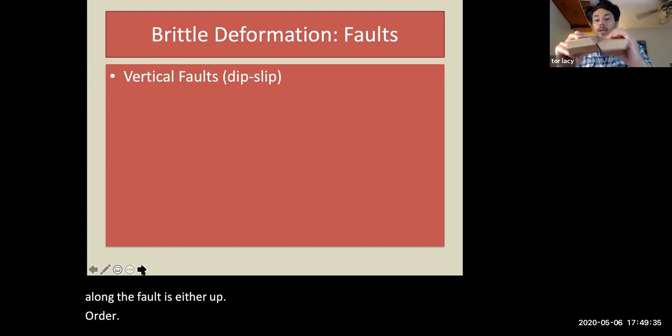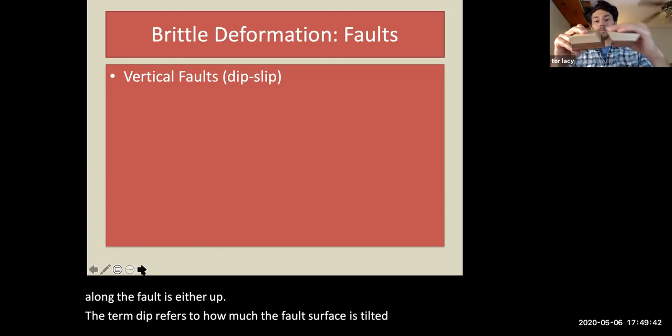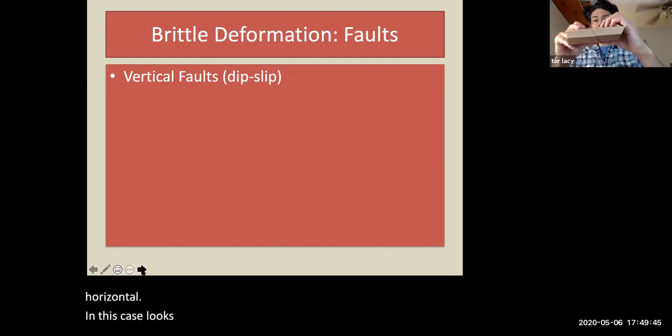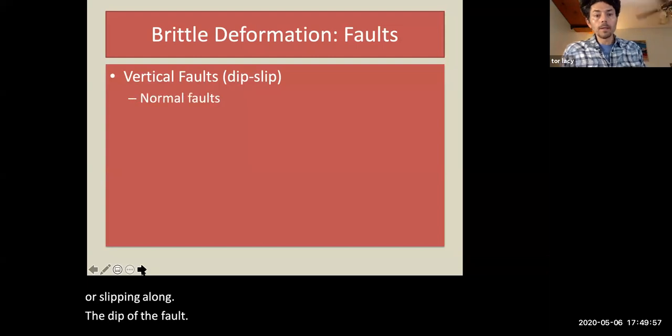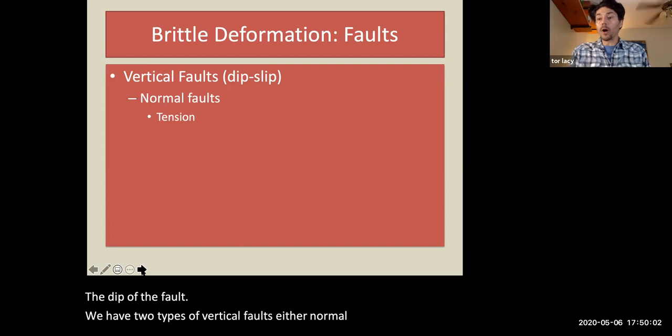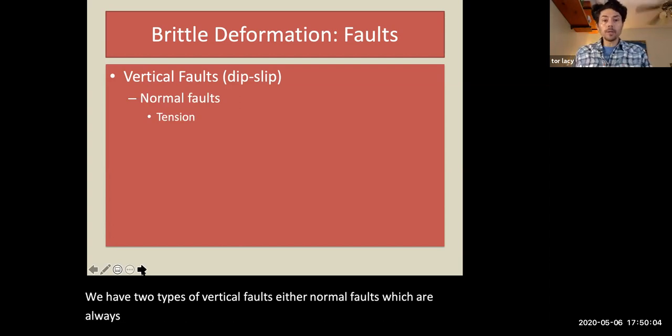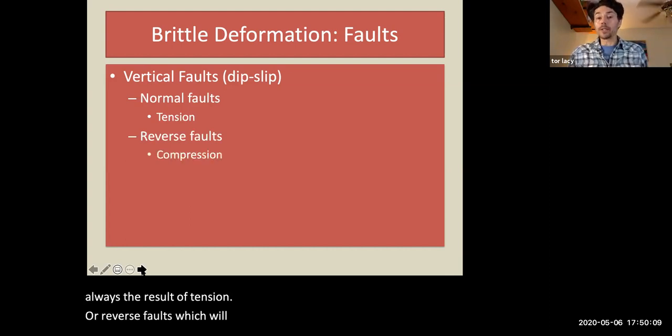The term dip refers to how much the fault surface is tilted from horizontal. In this case, it looks like about 60 degrees. And the fault block is sliding along or slipping along the dip of the fault. We have two types of vertical faults, either normal faults, which are always the result of tension, or reverse faults, which are always the result of compressional stress.